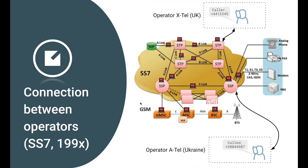Before we learn about PortaSwitch configuration, let's take a short trip back in time. Before VoIP hit the market, SS7 was the main protocol used for communication. SS7, or Signaling System 7, is a quick and intricate protocol — you can judge it for yourself just by looking at the picture in front of you. The equipment that supported this protocol was quite expensive and complex, and operators charged customers top dollar to be able to make a profit.